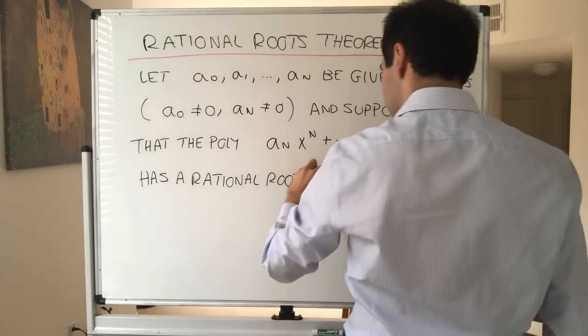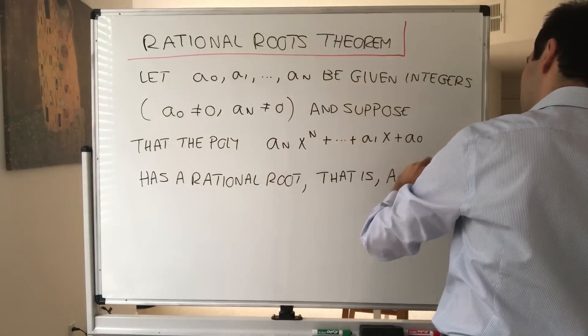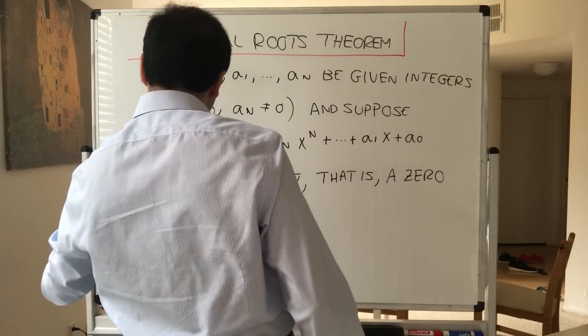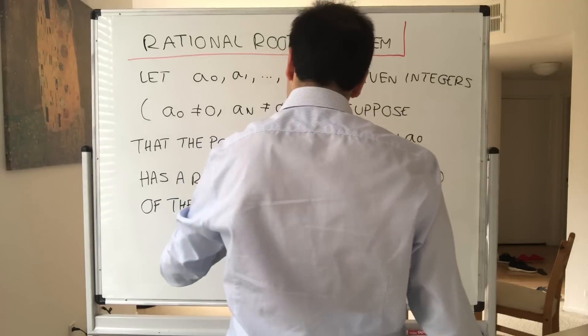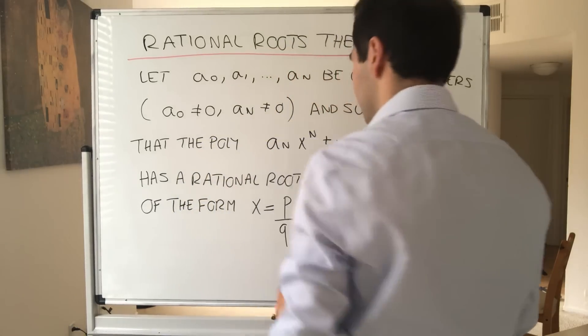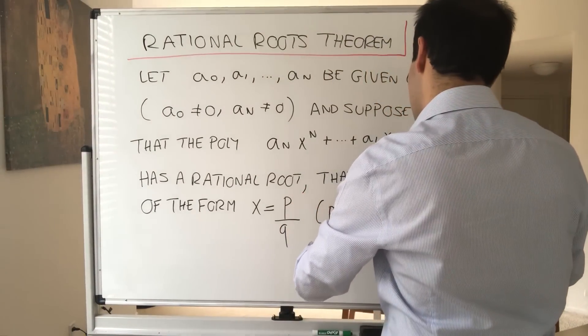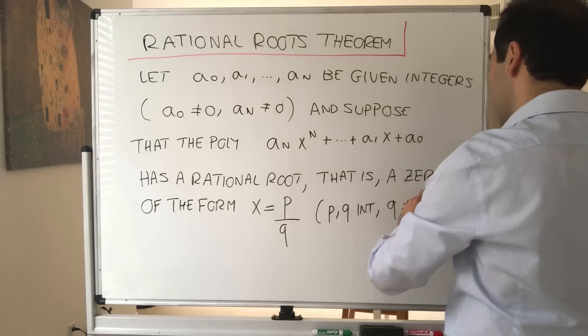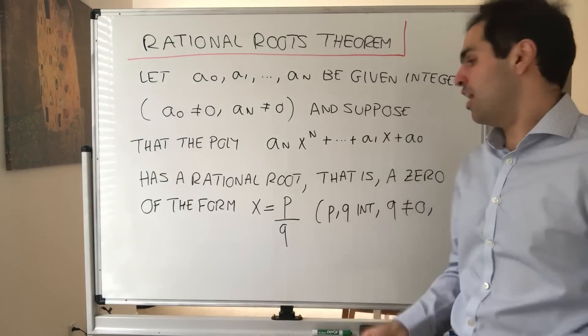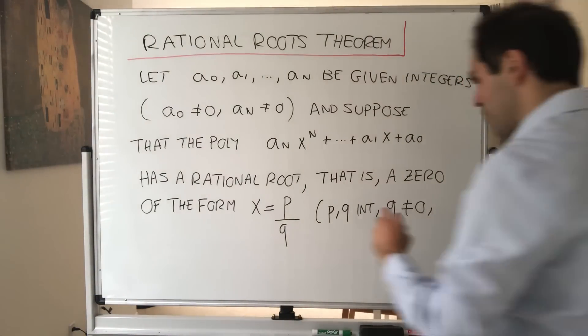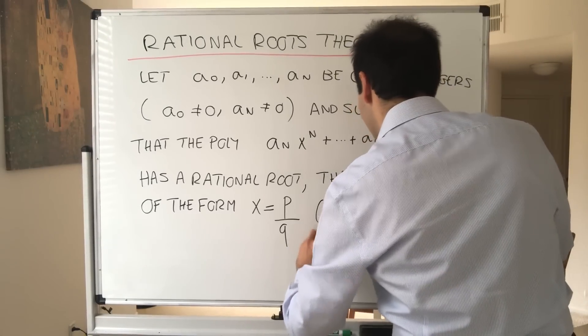That is, a zero of the form x equals p over q, and of course p and q are integers. q is non-zero, and moreover, of course, if you find two-fourths, you should just say one-half. So p and q have no common factors.